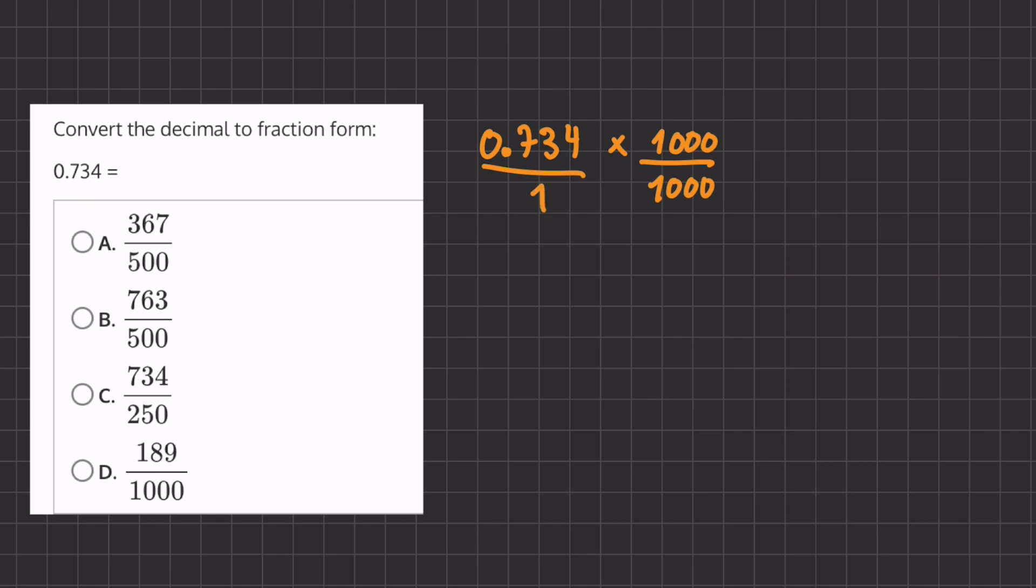Our denominator for this one is 1. Okay, so if we multiply 0.734 by 1000, we'll just get 734 and our denominator of 1000.